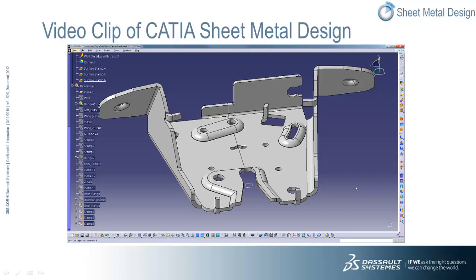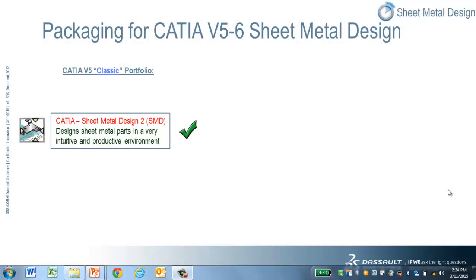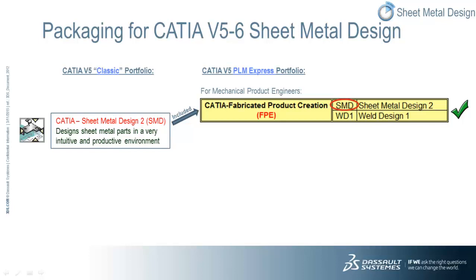It is worth noting that your V5 data is always accessible in V6 and the 3DEXPERIENCE platform. CATIA V5-6 sheet metal design can be obtained in one of three ways. The first option is to buy CATIA Sheet Metal Design 2, or SMD, within the CATIA V5 classic portfolio as an add-on or shareable product. In this manner it can be added to any existing CATIA V5 configuration or shared across multiple configurations. The second option is to buy CATIA Fabricated Product Creation, or FPE, within the CATIA V5 PLM Express portfolio as an add-on product, which can be added to any existing CATIA V5 PLM Express CAT configuration.